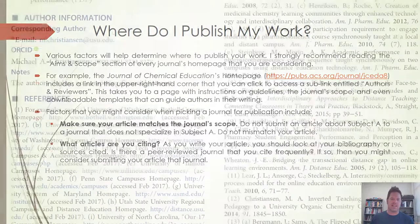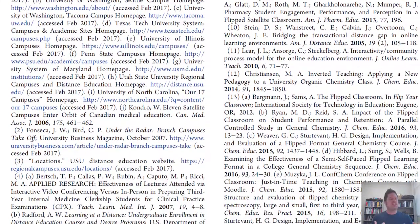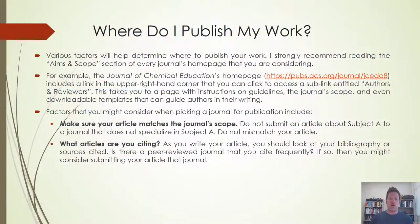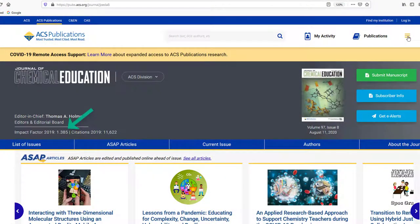What articles are you citing? As you write your article, look at your bibliography or sources cited. Is there a peer-reviewed journal that you cite frequently? If so, you might consider submitting your article to that journal. Also consider impact factor — a number that conveys how much a journal gets read and cited. Not all journals have impact factors; GEET still does not. In general, the higher the impact factor number, the more that journal will be read. Impact factors are definitely one thing to consider because you probably want your articles to get traction, that is, to be cited and read broadly. JCemEd's impact factor, for example, is 1.385.